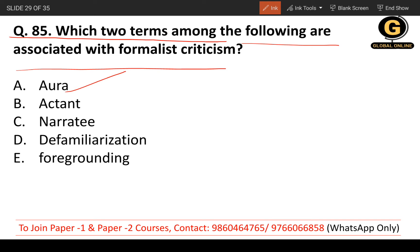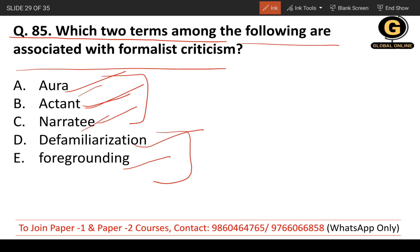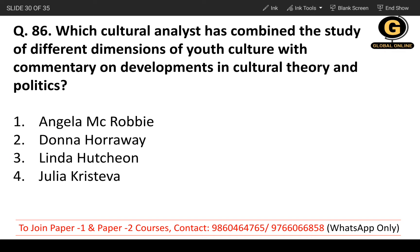Question 85: Which two terms among the following are associated with formalist criticism? The options include aura, actant, rate, defamiliarization, and foregrounding. The correct answers are D and E — defamiliarization and foregrounding — as these are specifically associated with formalist criticism.